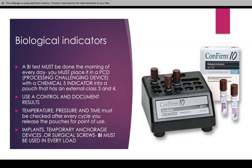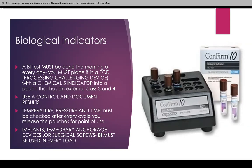What is a control? In that little machine, there is going to be one labeled C that we place at the same time as the one that has been processed in the sterilizer. Temperature, pressure, and time must be checked after every cycle before you release the pouches for point of use. We do this in the morning, and what allows us to release it is checking that the parameters — time, pressure, and temperature — have been met.